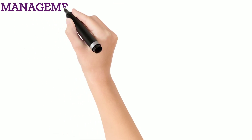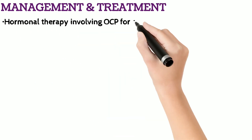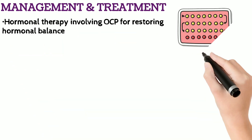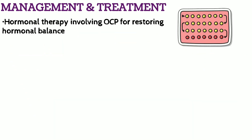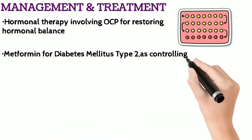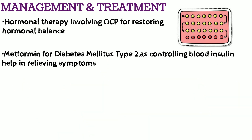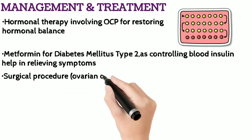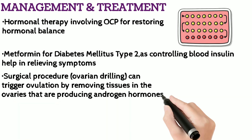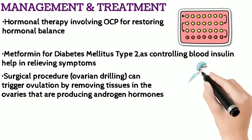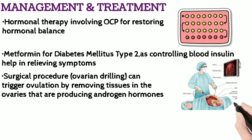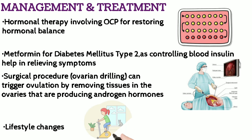Primary management of PCOS is based on restoring the hormonal imbalance by administering oral contraceptive pills. Metformin can be used for controlling blood insulin levels, as elevated insulin can act as a trigger for fast-impulse GnRH secretion. Surgical procedures like ovarian drilling, though less common, can still be used for controlling androgen secretion. Most importantly, lifestyle changes — try leading a healthy lifestyle with healthy eating habits.